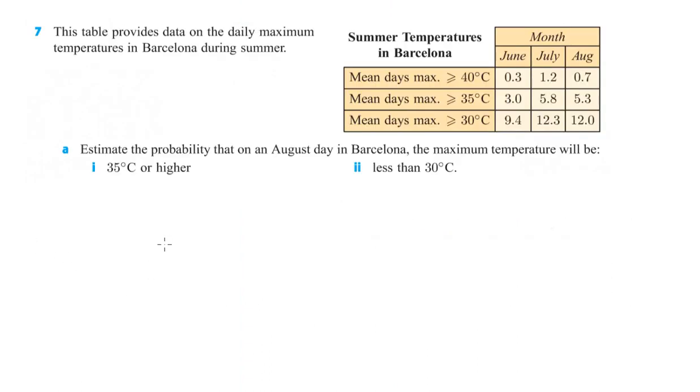Alright, last one for this assignment, number 7. This table provides data on the daily maximum temperatures in Barcelona during summer. So we get all this stuff here. Estimate the probability that on an August day in Barcelona, the maximum temperature will be 35 degrees Celsius or higher. So let's see, we are talking about August here. So that's just this here that we're looking at.